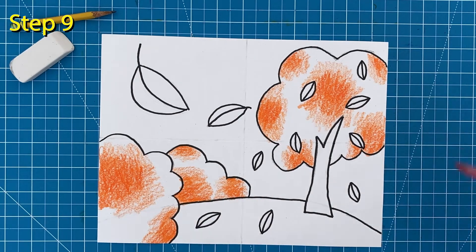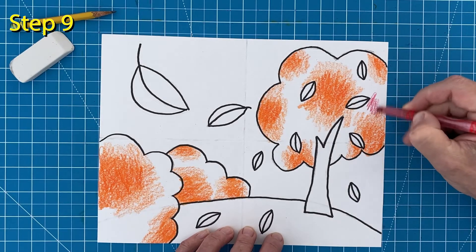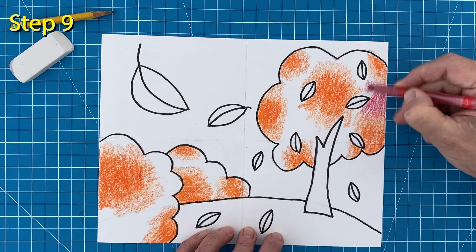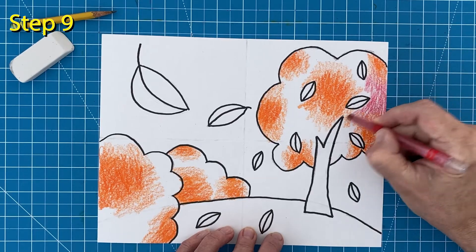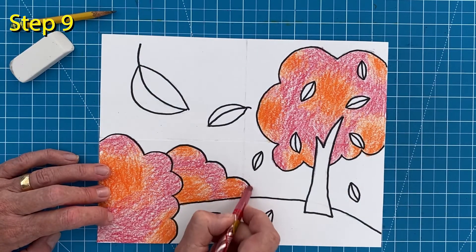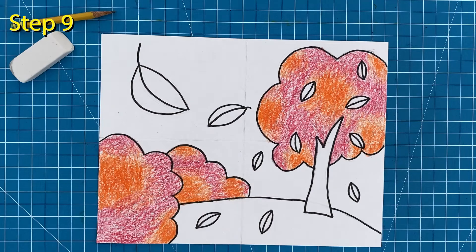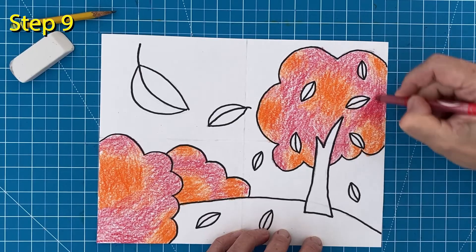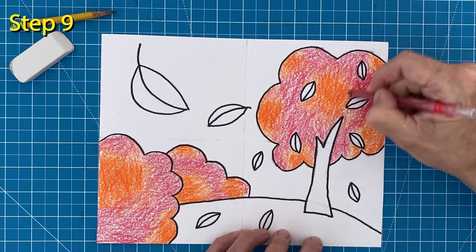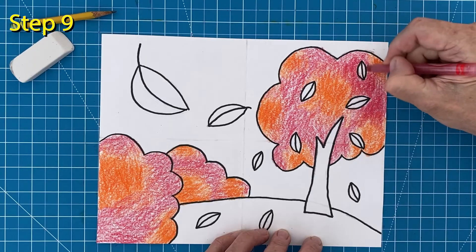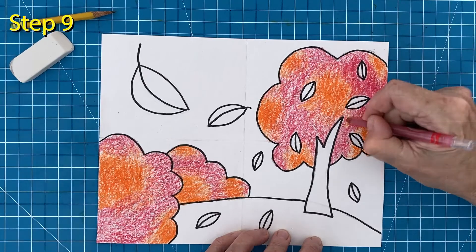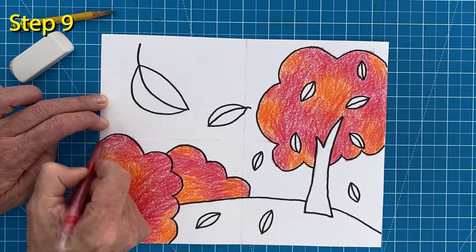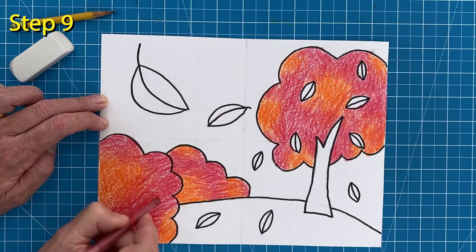Now fill in between the orange areas with a red crayon. Use a medium kind of pressure to cover up all the white area except for the leaves of course. Now go back and make some of the red areas more red by pressing even harder with the red crayon. There's no right or wrong way to do this. Just experiment with mixing lots of bright colors in your bushes and on your tree.